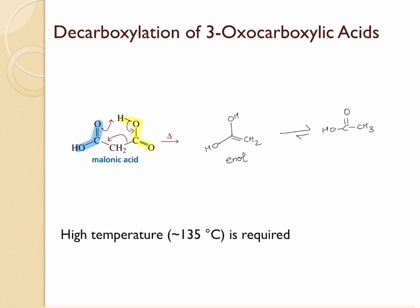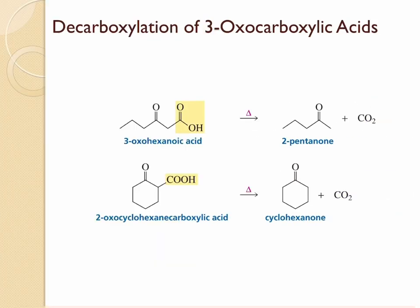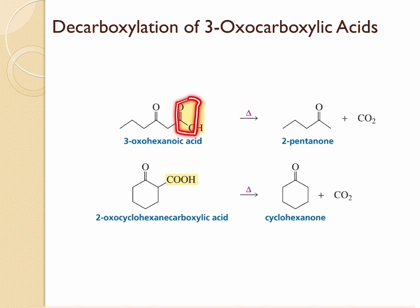The enol form can undergo tautomerization to give the keto form. On the whole, decarboxylation can happen in 3-oxo carboxylic acids. Here are two more examples: 3-oxo hexanoic acid undergoes decarboxylation to give a ketone. Similarly, 2-oxo cyclohexane carboxylic acid undergoes decarboxylation, eliminating the carbon dioxide to give the cyclohexanone product.